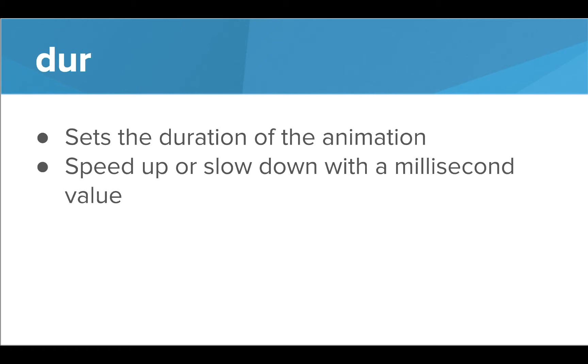Dur is an attribute that sets the duration of an animation. You can use this to speed up or slow down the animation. Dur is measured in milliseconds, and the default value is 1000, which corresponds to one second.